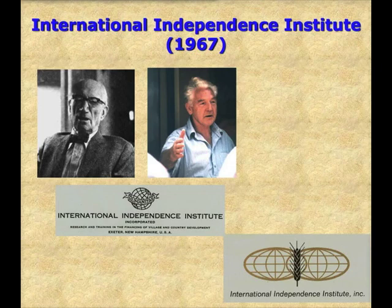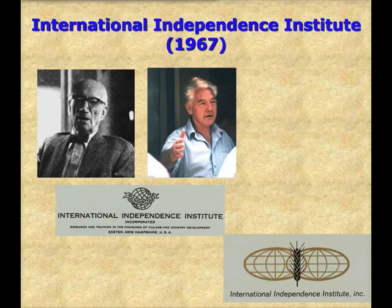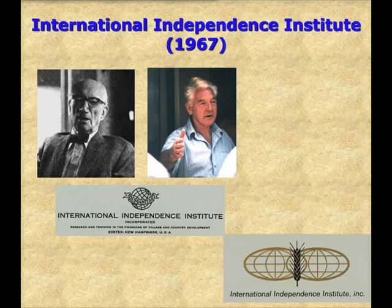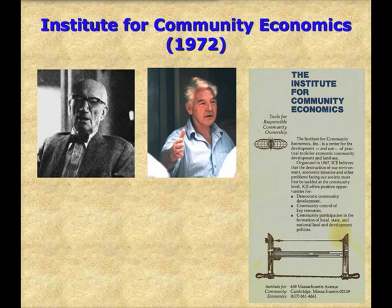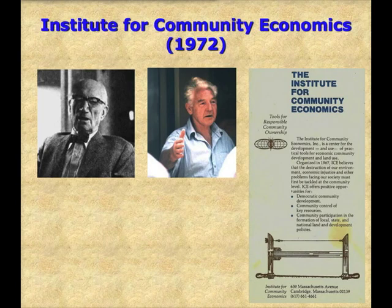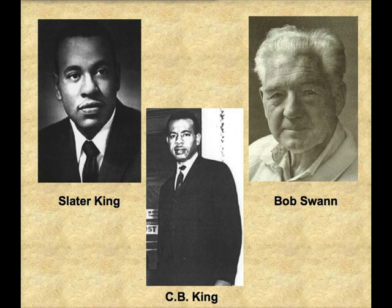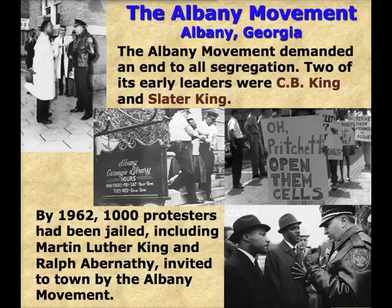What Borsodi saw in the Gramdan movement was an affirmation of his own ideas about rebuilding rural economies on the basis of self-sufficient villages. Settling in Exeter, New Hampshire, he created a new non-profit to promote this model in other countries, including his own. He appointed himself executive director and chairman of the board. Bob Swan was named the Institute's field director, with responsibility for making Gramdan a reality in the United States. Over the next 20 years, the Institute regularly changed its logo, location, and eventually its name. In 1972, it moved to Boston and became the Institute for Community Economics. All this talk about creating a Gramdan movement in America remained fairly abstract, however, until Swan began working with two brothers in Albany, Georgia.